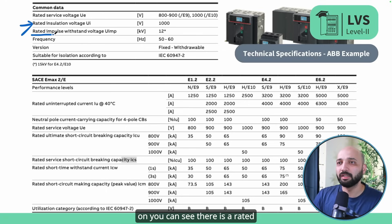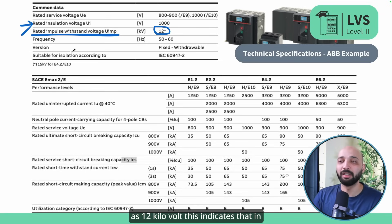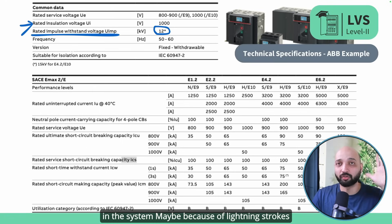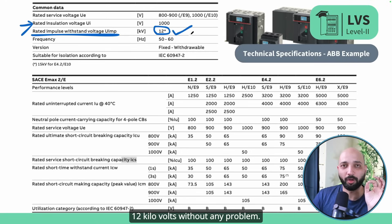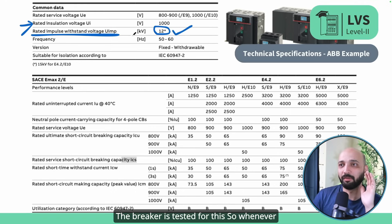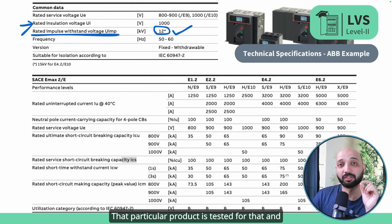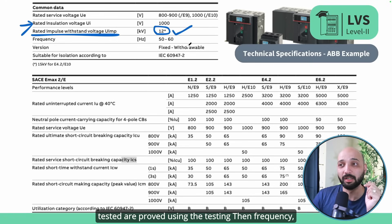Next is the rated impulse withstand voltage, Uimp, mentioned as 12 kilovolts. This indicates that if an impulse voltage occurs in the system — maybe because of lightning strokes or load shedding — the breaker is capable of withstanding 12 kilovolts without any problem. The breaker is tested for this. Whenever values are mentioned in a datasheet or technical specification, that means the product has been tested and proven for those values.